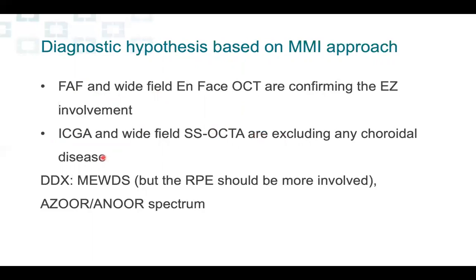Through multimodal imaging we can put together a diagnostic hypothesis. Autofluorescence and wide-field OCT confirm there's just involvement of the photoreceptors. ICGA and swept-source OCTA composite exclude any choroidal disease. In my mind, the diagnosis was either MUTE — unlikely because there's no RPE involvement — but more likely pointing toward AZOR (Acute Zonal Occult Outer Retinopathy) or AMOR, the annular form of the retinopathy. The patient was followed and is stable; she wasn't treated because we don't know enough about this disease, and after all she's 20/20.